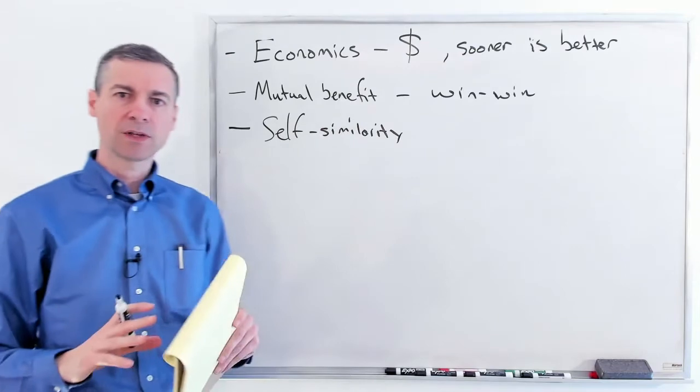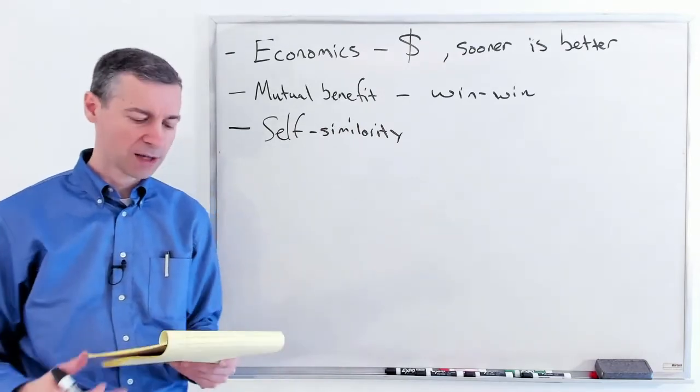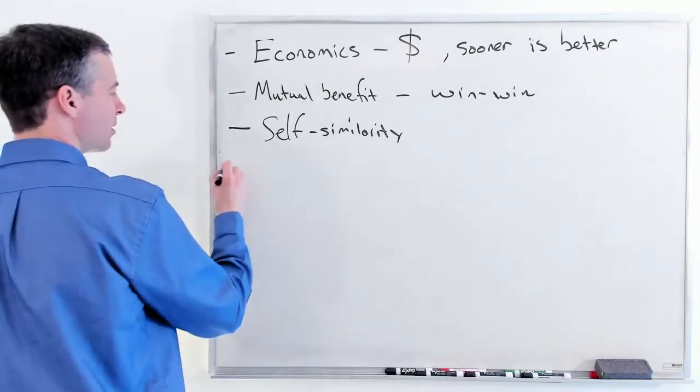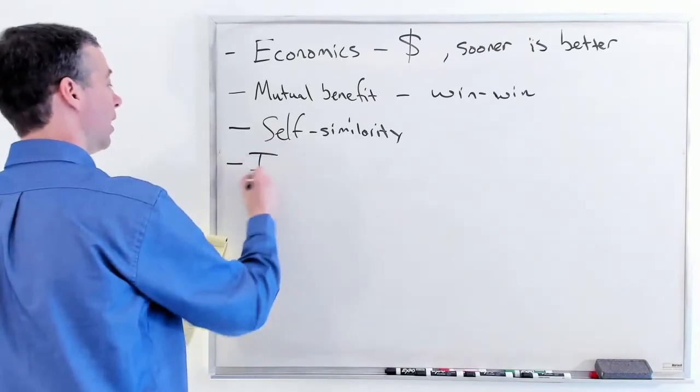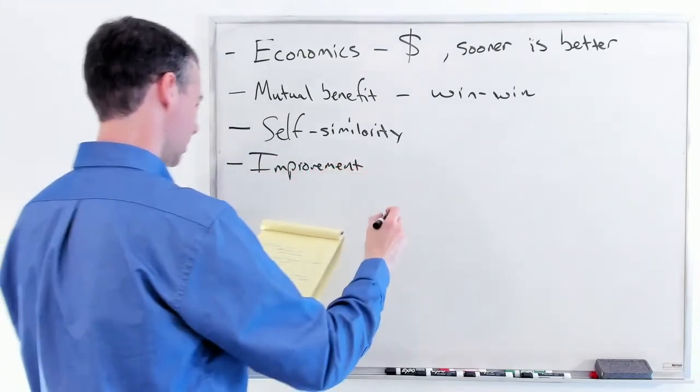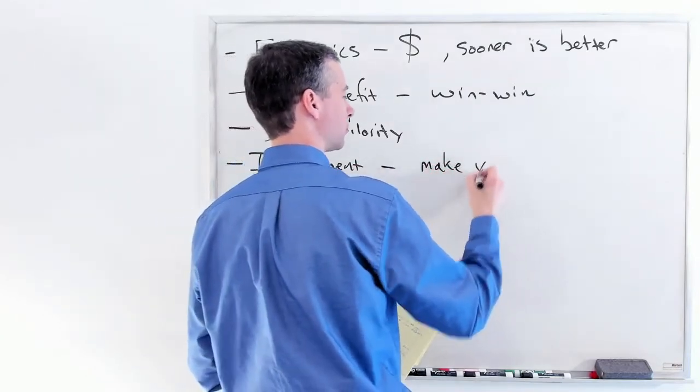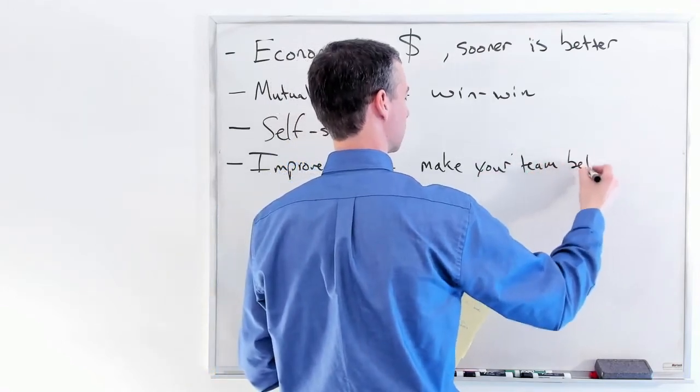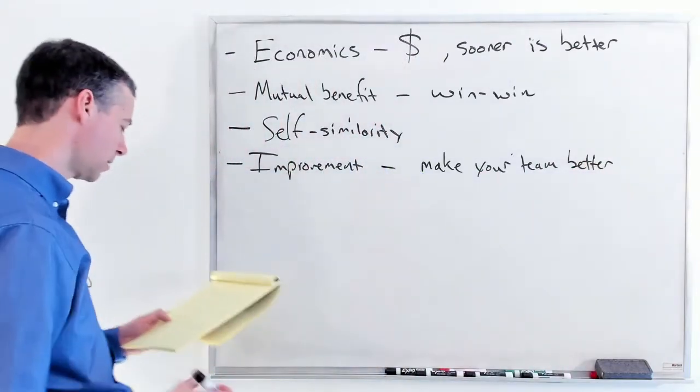He has a principle of self-similarity. There are certain patterns and ways to solve problems, and we can find solutions at many different scales and contexts. Next is the principle of improvement, which is basically: work to make your team better. We're always striving to improve our team, have the team work better.